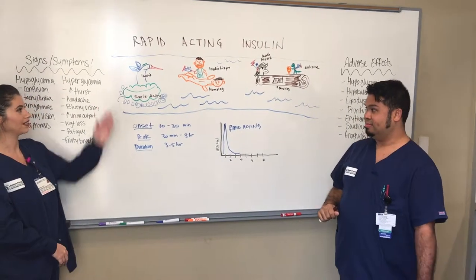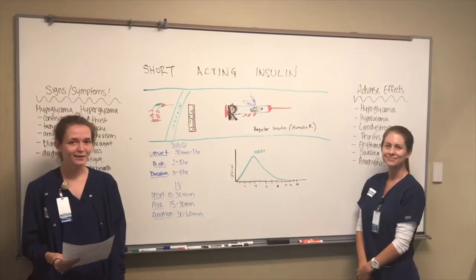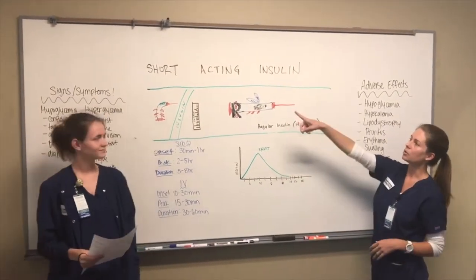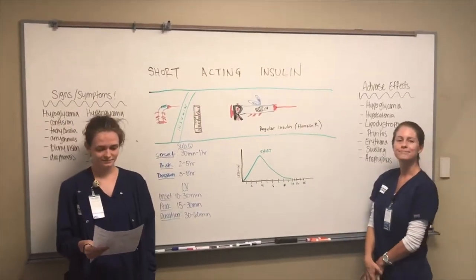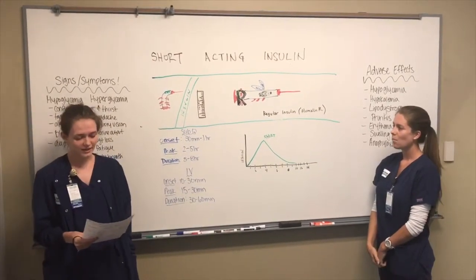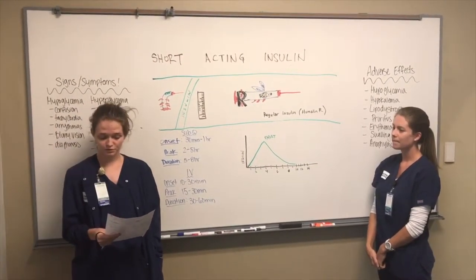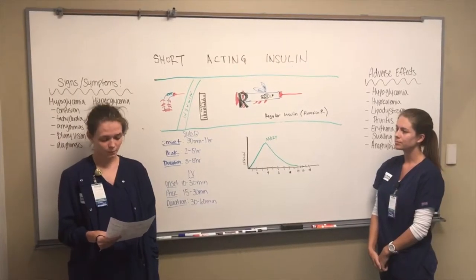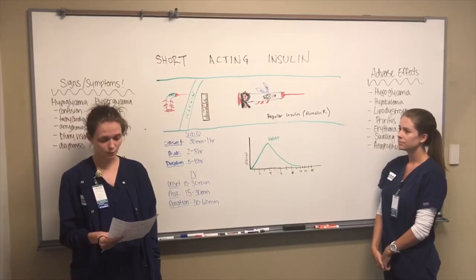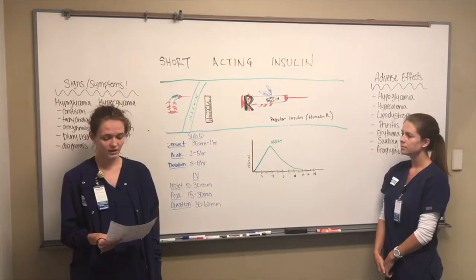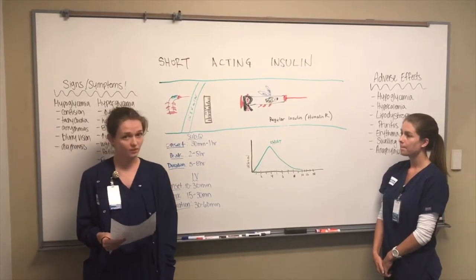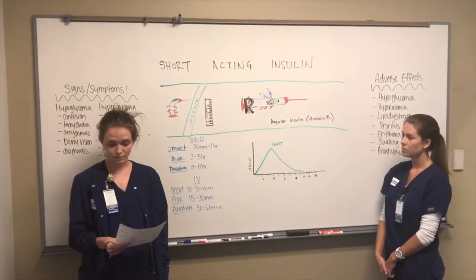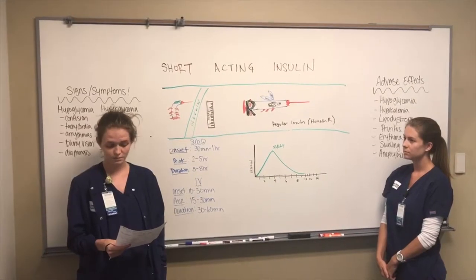And that's rapid acting insulin. Hi, my name is Kari. My name is Danielle, and we're going to be talking about short acting insulin. The uses for short acting insulin are to improve glycemic control, and the doses are 0.05 to 0.4 units per kilogram for the sub-Q route, and 0.1 to 0.2 units per kilogram for the IV route.